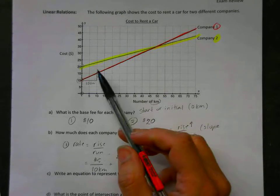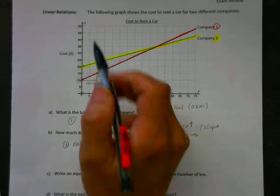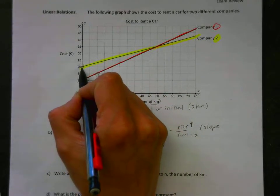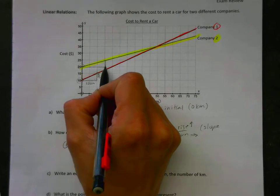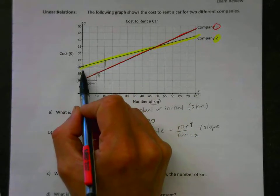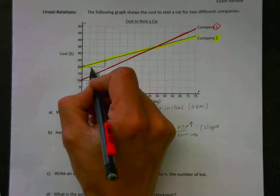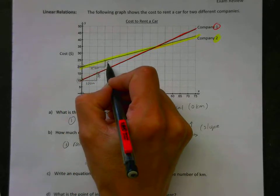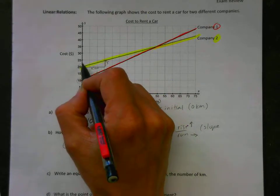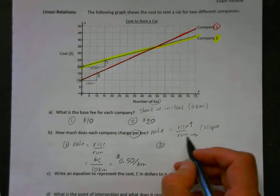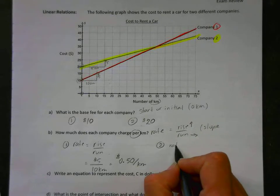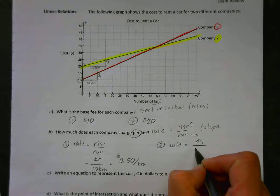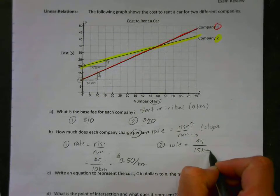Let's do number two now. Number two is this yellow line, and I want to find a nice triangle. So here's a point and here's a point. Make my triangle. And I look here and these are still worth five, so it's five, ten, fifteen kilometers. And my rise is five dollars, I go from twenty to twenty-five. So for number two, my rate is my rise, which is five dollars, and my run, which is fifteen kilometers.